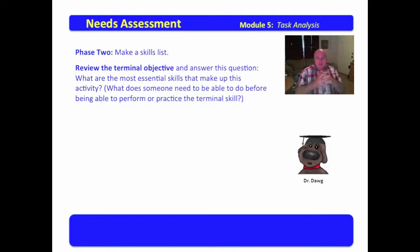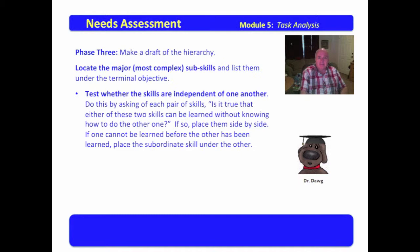Now, phase two, make a skills list. Review the terminal objective and answer this question. What are the most essential skills that make up this activity? What does someone need to be able to do before being able to perform or practice the terminal skill? You're trying to develop a step-by-step hierarchy of what must be done in order for the skill to be accomplished. You want to summarize each of the skills. That's what you're trying to do. You're identifying the skills, and then you're going to want to summarize each of them.